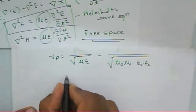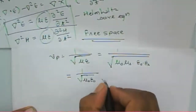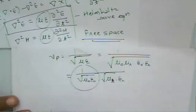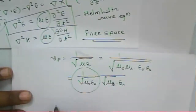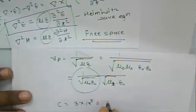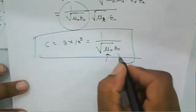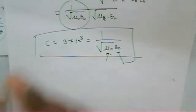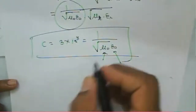The phase velocity is equal to 1/√(με). For a medium, μ = μ₀μᵣ and ε = ε₀εᵣ. So the phase velocity = 1/√(μ₀μᵣε₀εᵣ) = c/√(μᵣεᵣ), where c = 3×10⁸ m/s is the velocity of light in free space, with c = 1/√(μ₀ε₀). In optical communication we then examine what rays are propagating.